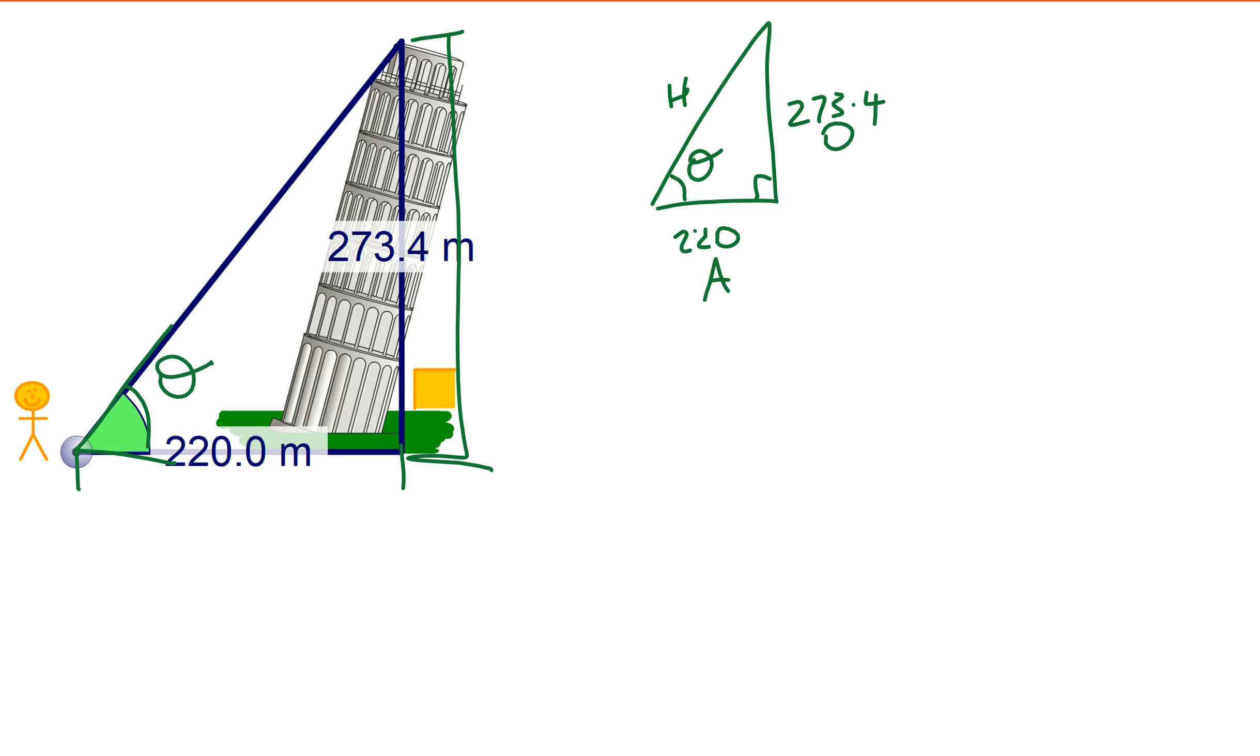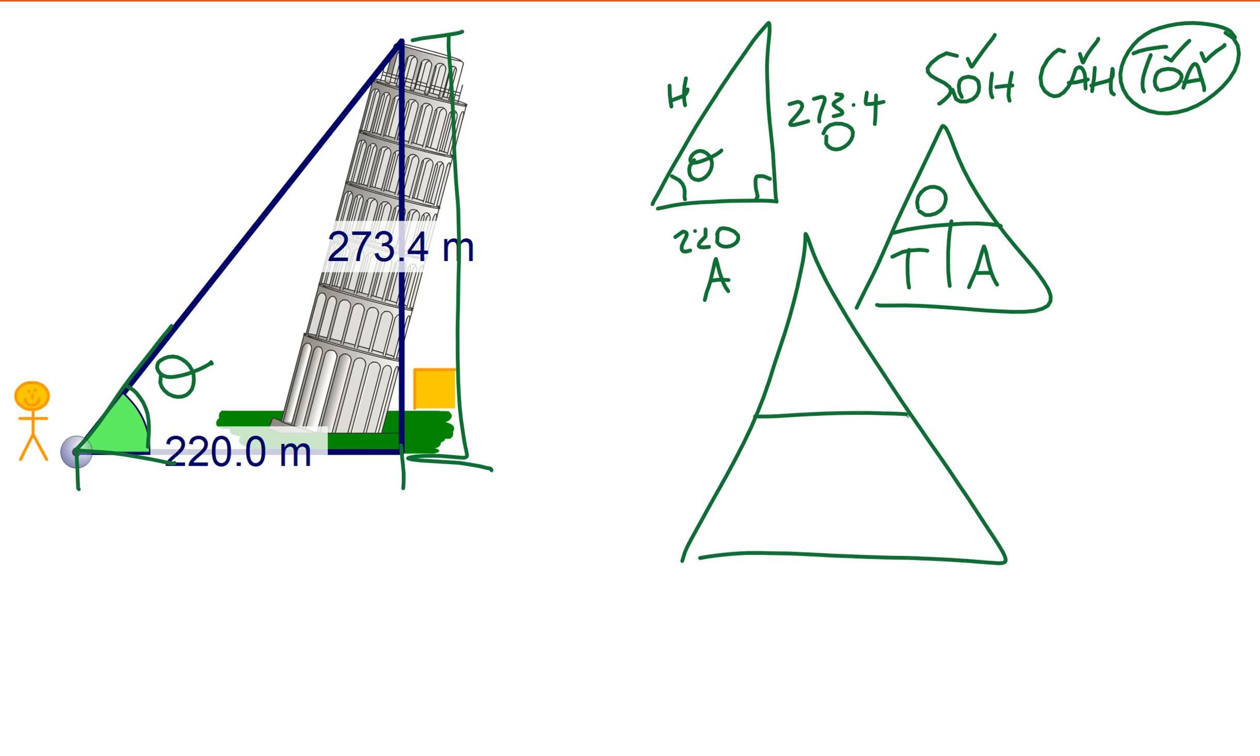Next is SOH CAH TOA, still exactly the same, am I right? Still ticking and crossing the same ones. So I've got O, so I ticked the O. I've got the A, so I'll tick the A. Two are ticked and that's the TOA, so I'm still going to use TOA. I'm going to write down my little TOA triangle, even bigger one. What goes in this even bigger one? Well, 273.4 goes in opposite, doesn't it? So 273 goes up here and then 220 goes down there. What goes in the bottom length? Tan theta.